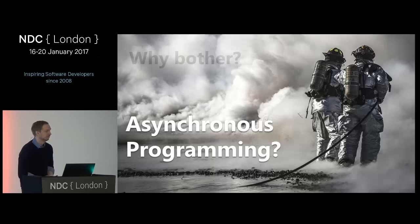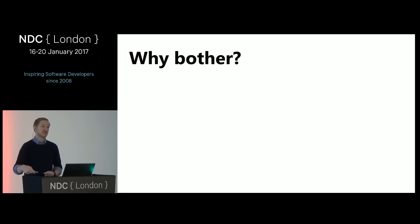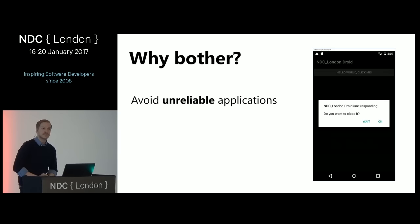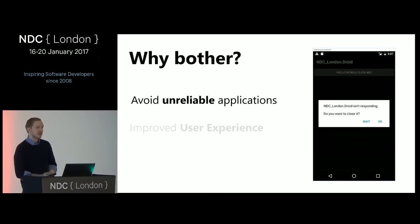So why do we bother writing applications using asynchronous principles? It's pretty simple — we can build applications that behave better. One of the most obvious reasons is that I want to avoid unreliable applications. An unreliable application could, for instance, be an Android application that behaves weirdly — you press a button and the application thinks it's crashing. In this case, I'm hogging a lot of resources on the UI thread, so the OS thinks the application is crashing. We can apply asynchronous principles to build better apps and improve user experience.